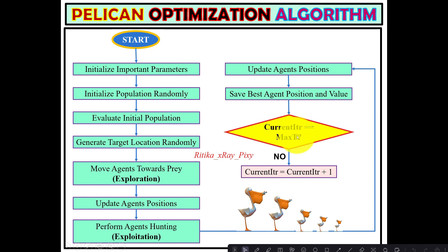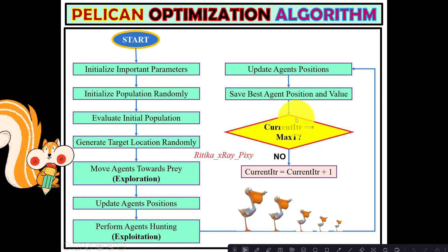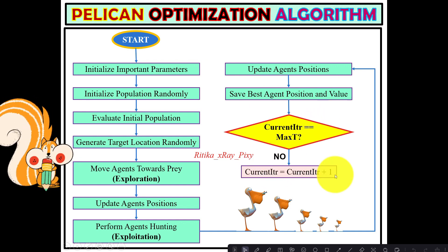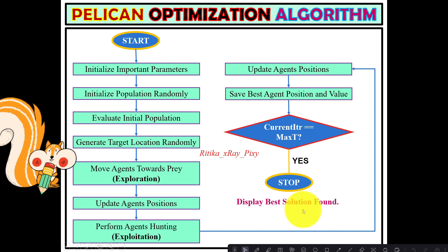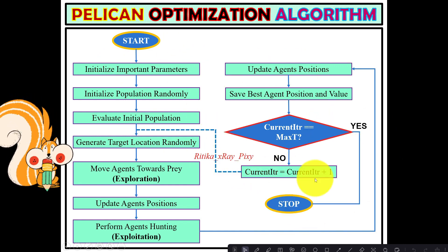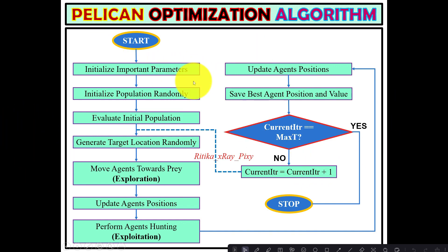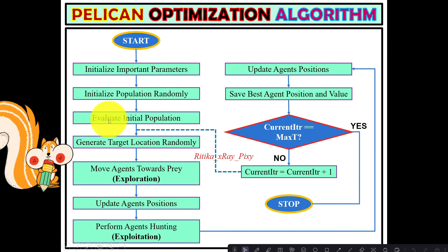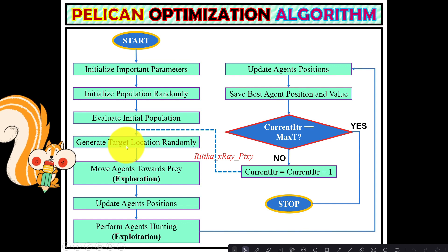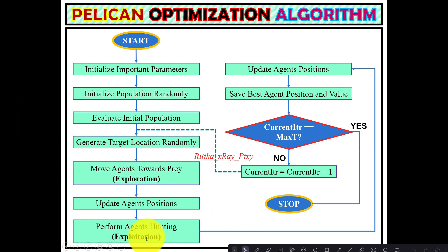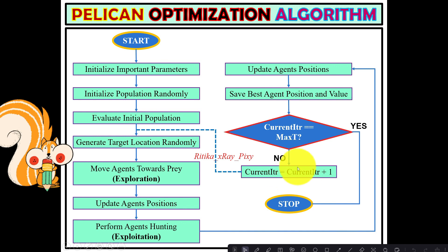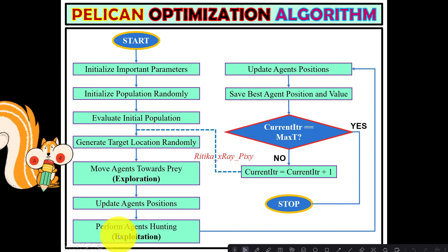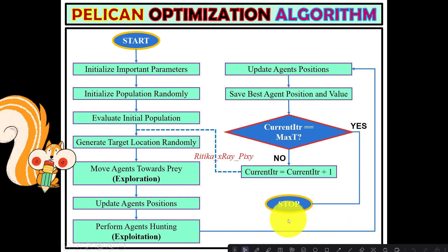Next, the stopping condition is checked: whether the current iteration equals the maximum iteration. If not met, the counter is incremented and the loop repeats; otherwise, the best solution found is displayed. To summarize: initialize parameters, then population, evaluate the population, generate the target randomly, perform exploration and exploitation phases, update agent positions, save the best agent position and value, and check the stopping condition.